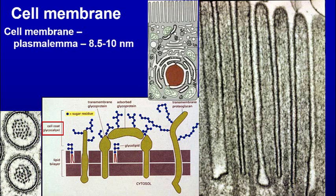If we look at the cell membrane, it's about 8 to 10 nanometers in thickness. You can see the thickness from the inside to the outside — it's a trilaminar structure. It has polar ends on either side and a hydrophobic area in the center, with lipid bilayers, proteins projecting up into it, and sugars on the surface. Those sugars form the glycocalyx coat that surrounds the cell.